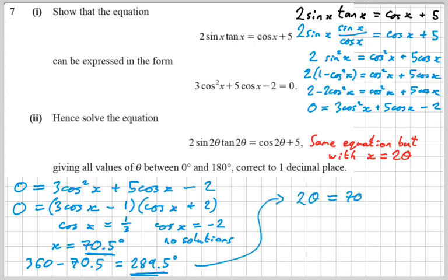Great. So if 2 theta is equal to those two things, theta must be equal to half of each of those.